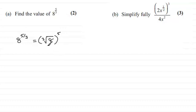So the cube root of 8, well that's 2, so you've got 2 and that's all to the power 5. So 2 to the power 5 is going to be 32.